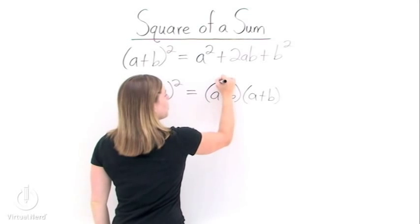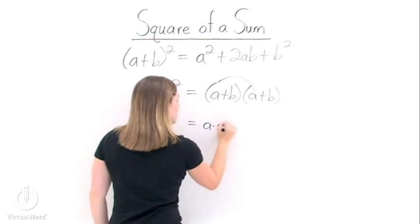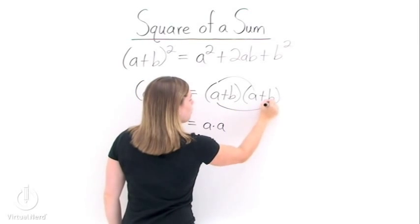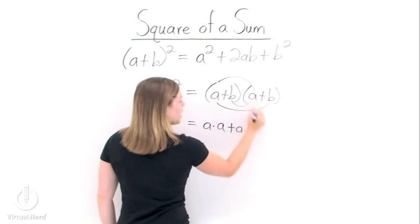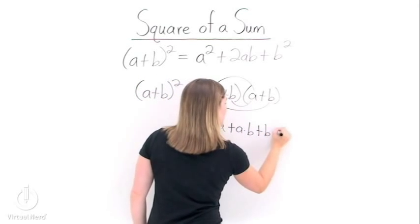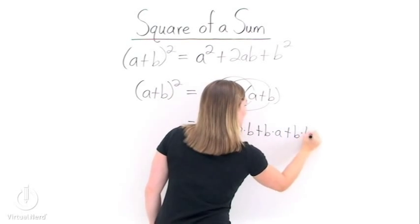So to foil, we do our first terms, and we get a times a. Add our outer terms, a times b. Then our inner terms, b times a. And lastly, our last terms, b times b.